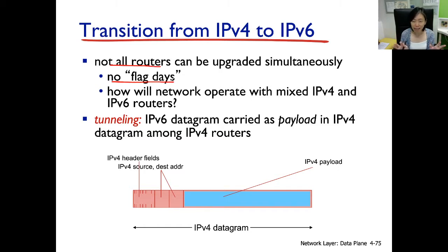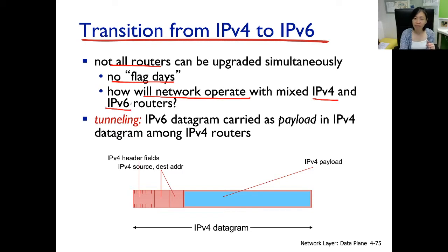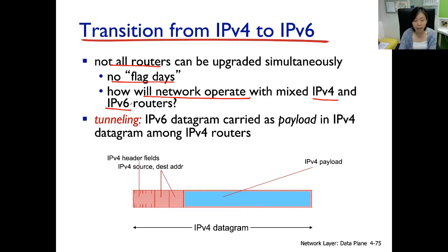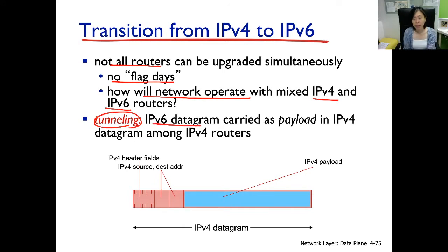So how will the network operate with part of the internet running IPv4 and some other parts running IPv6? The transition from IPv4 to IPv6 — how do we allow a mix of IPv4 and IPv6 routers? The technique is what's called tunneling: establishing tunnels between routers at the edge of the IPv6 network, going into IPv4, and then back to IPv6. If a packet is generated from the IPv6 space, the network layer will generate an IPv6 packet.